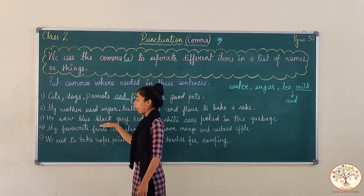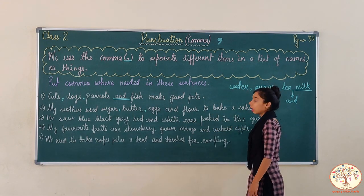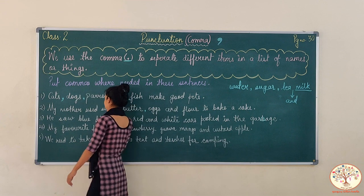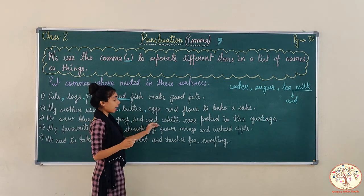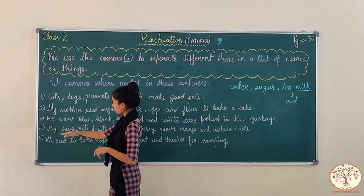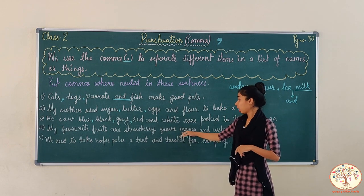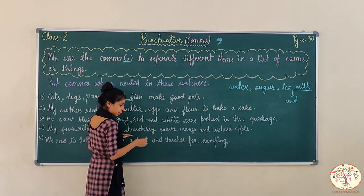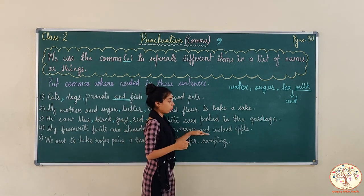He saw blue, black, grey, red and white cars parked in the garage. So what he saw: blue, black, grey, red and white cars parked in the garage. My favorite fruits are strawberry, guava, mango and custard apple. So our list is: strawberry, guava, mango and custard apple.